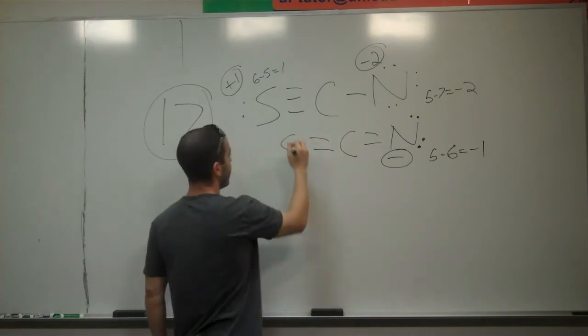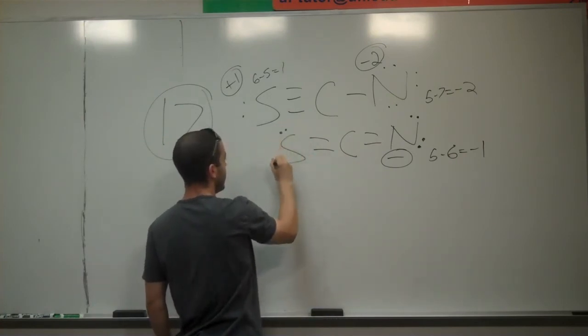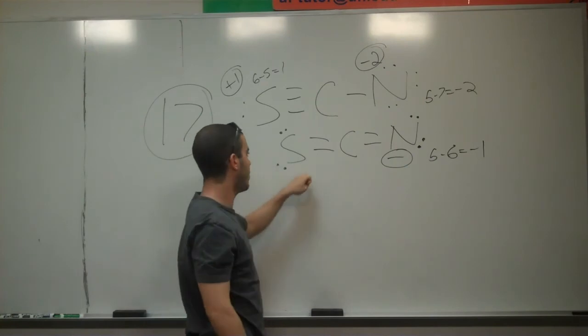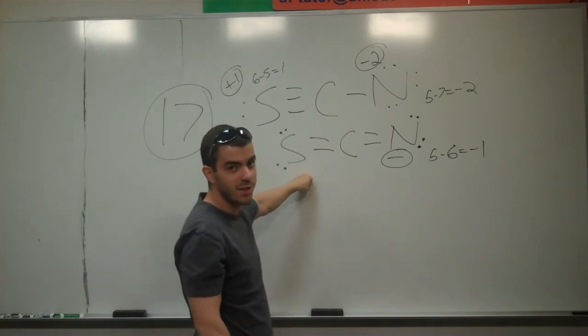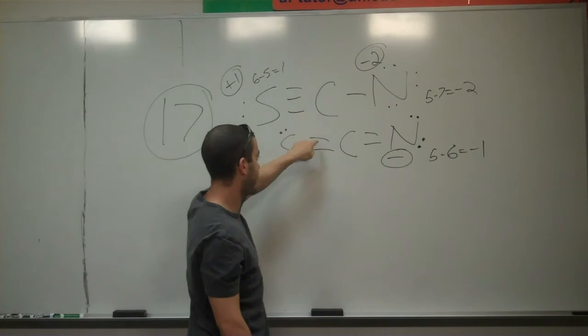Carbon's still neutral. And sulfur would have this many electrons, because we want it to have a full octet, one, two, three, four, five, six, seven, eight.